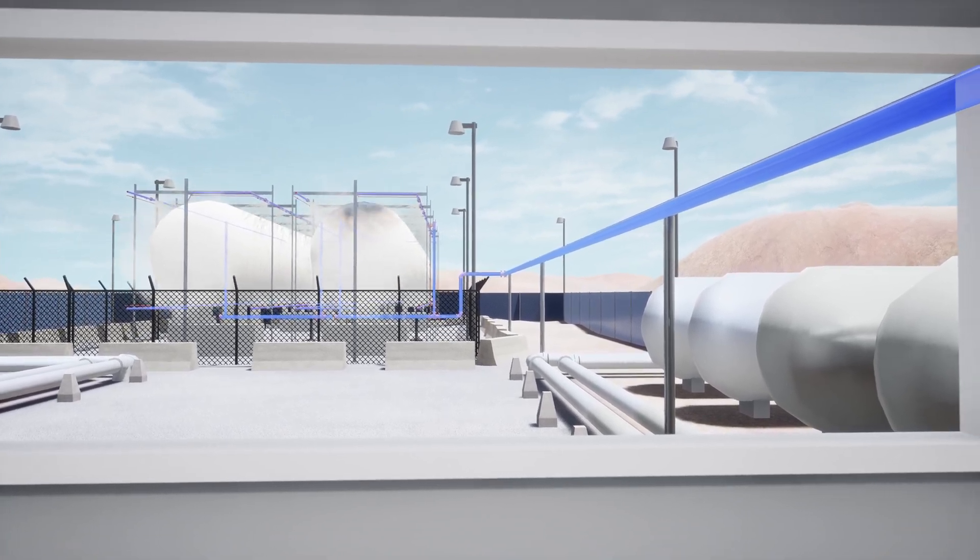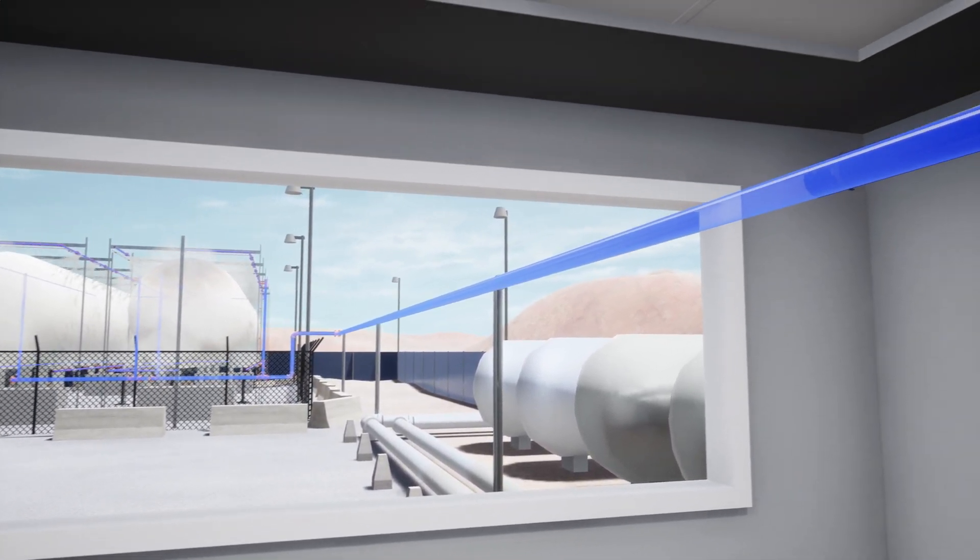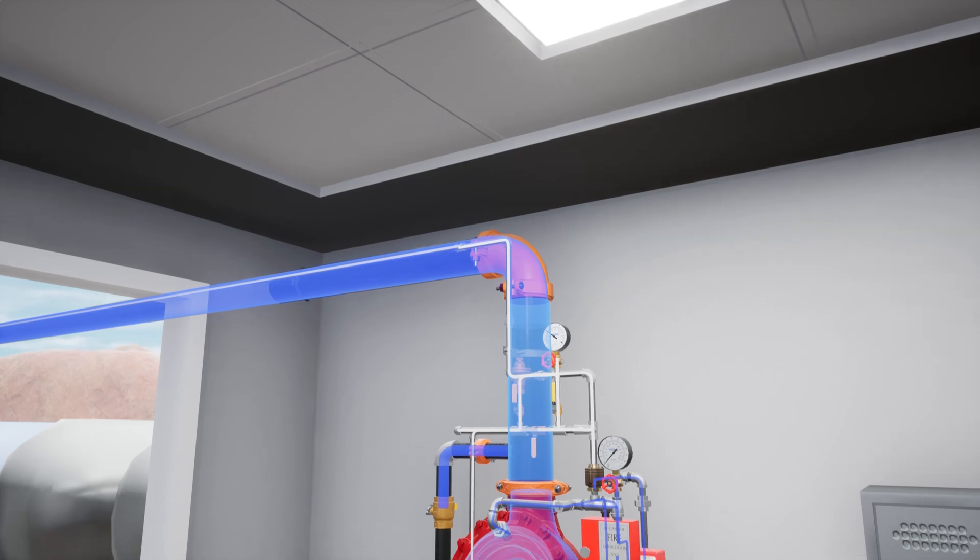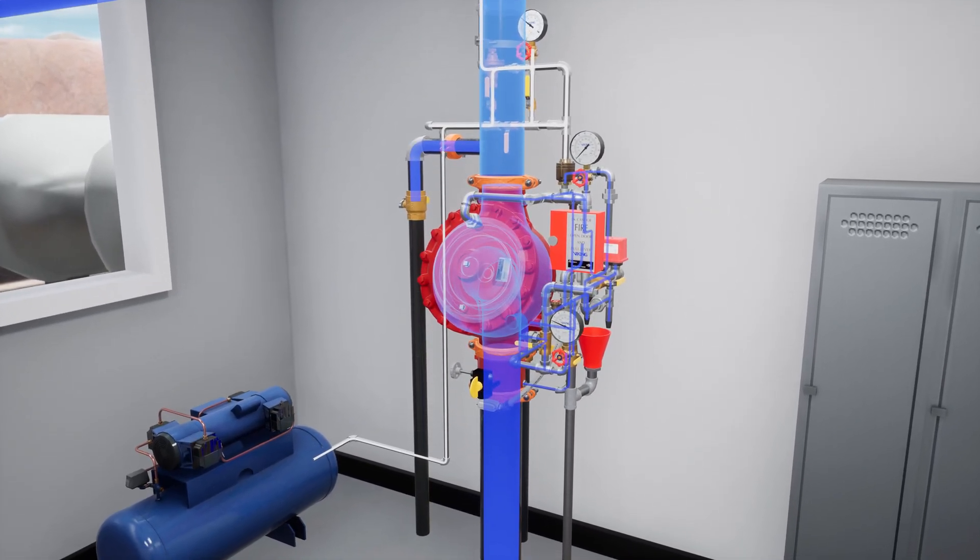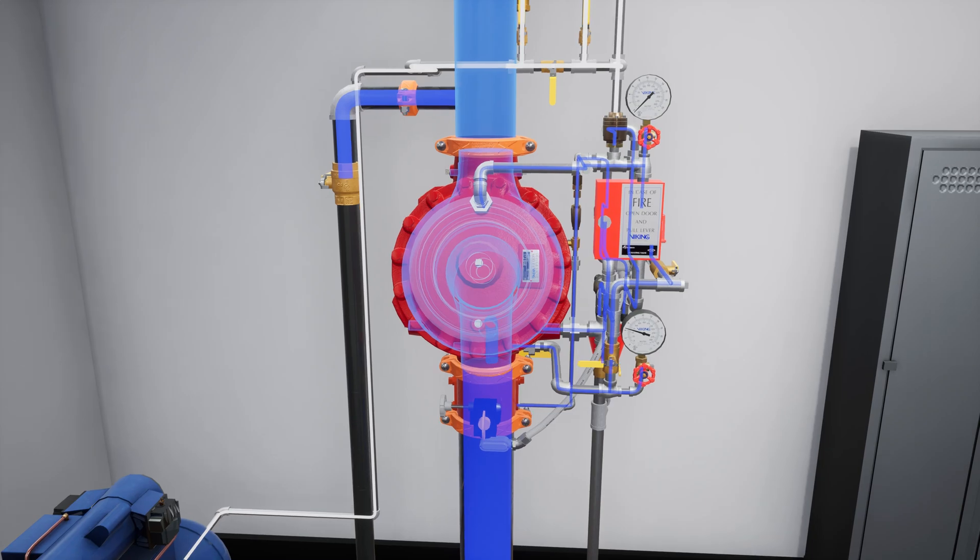In this scenario, we are looking at propane storage tanks where a fire has been extinguished and the area is safe to enter. Let's go through the steps of resetting a pneumatic deluge system equipped with an F1 deluge valve.